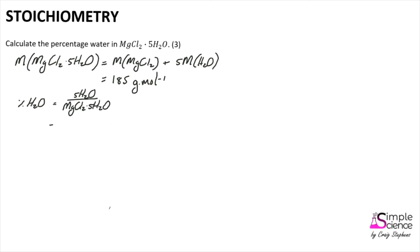And we say that five times the molar mass of water, so five times 18 is a molar mass of 90, over that molar mass of 185 grams per mole. And to calculate a percentage, we multiply that by 100 to find that this substance is 48.65 percent water.